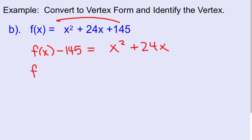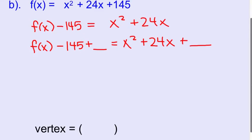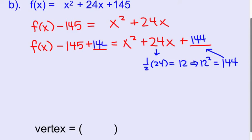Now I'm just going to rewrite the function with a plus and a blank, equals x squared 24x plus and a blank. We have to figure out what's going to go in that blank. So we're going to take half of our middle term, 24, which is 12, and then we square that number. 12 squared is 144. So we're going to add 144 here. We also have to add 144 there.